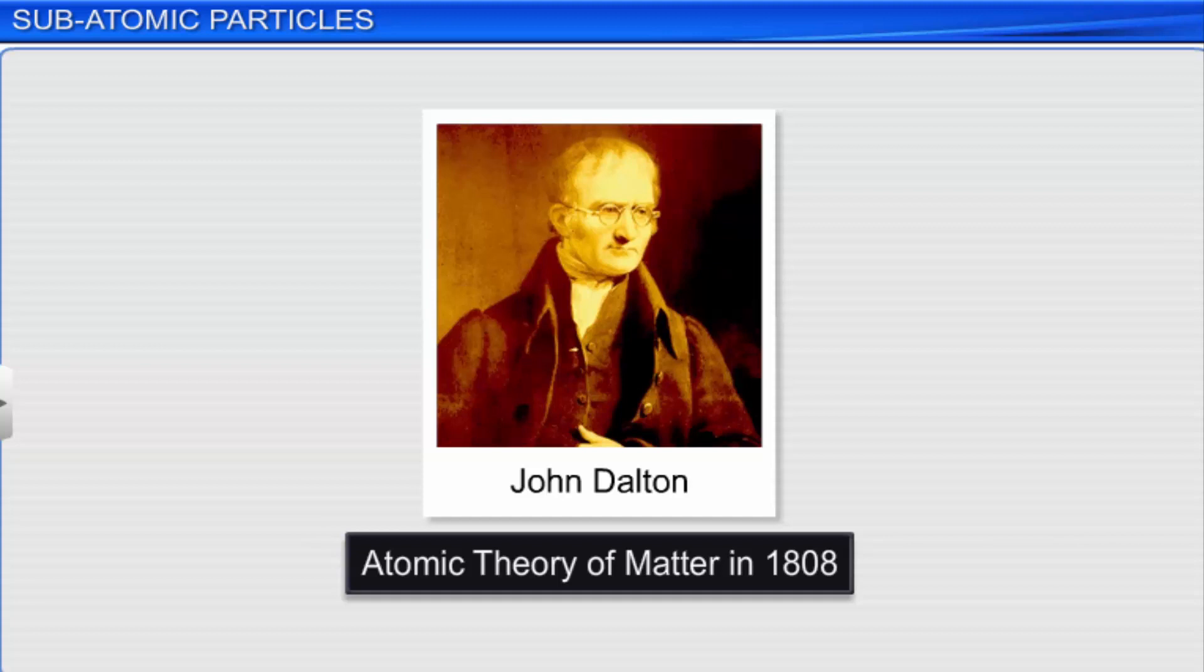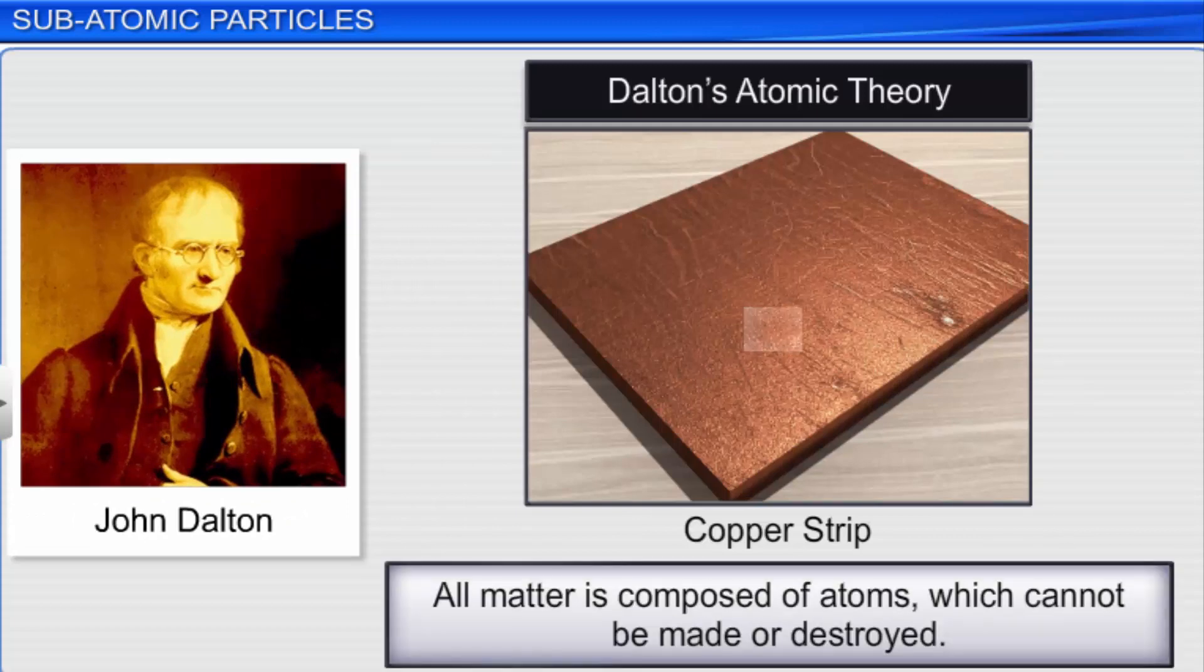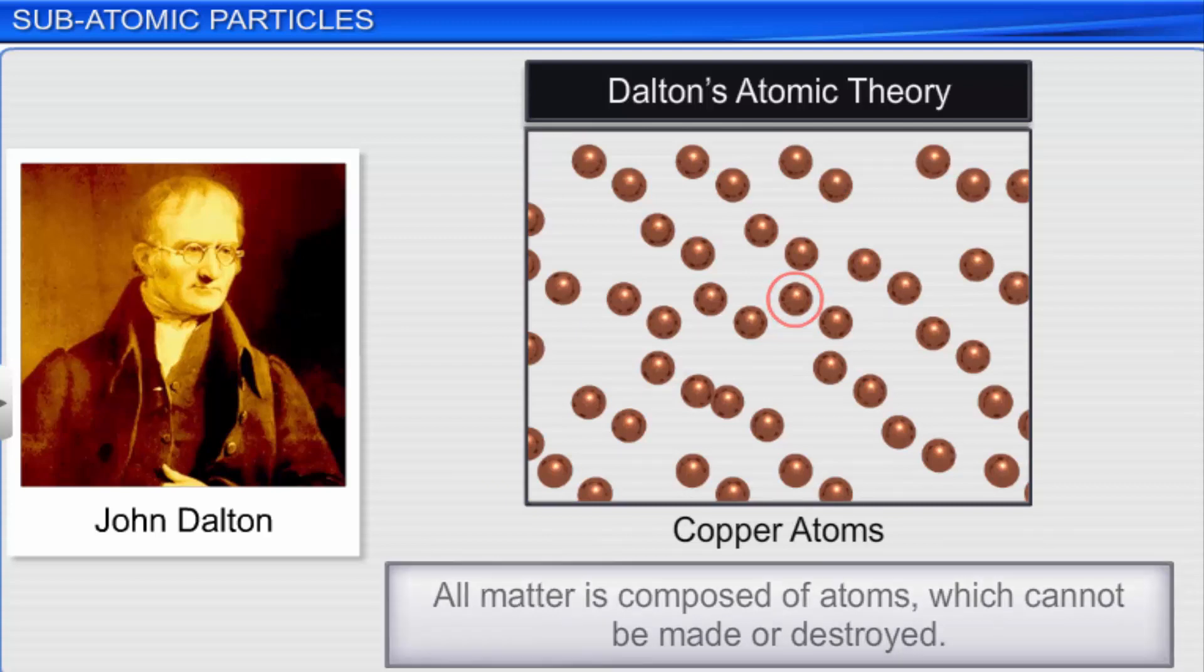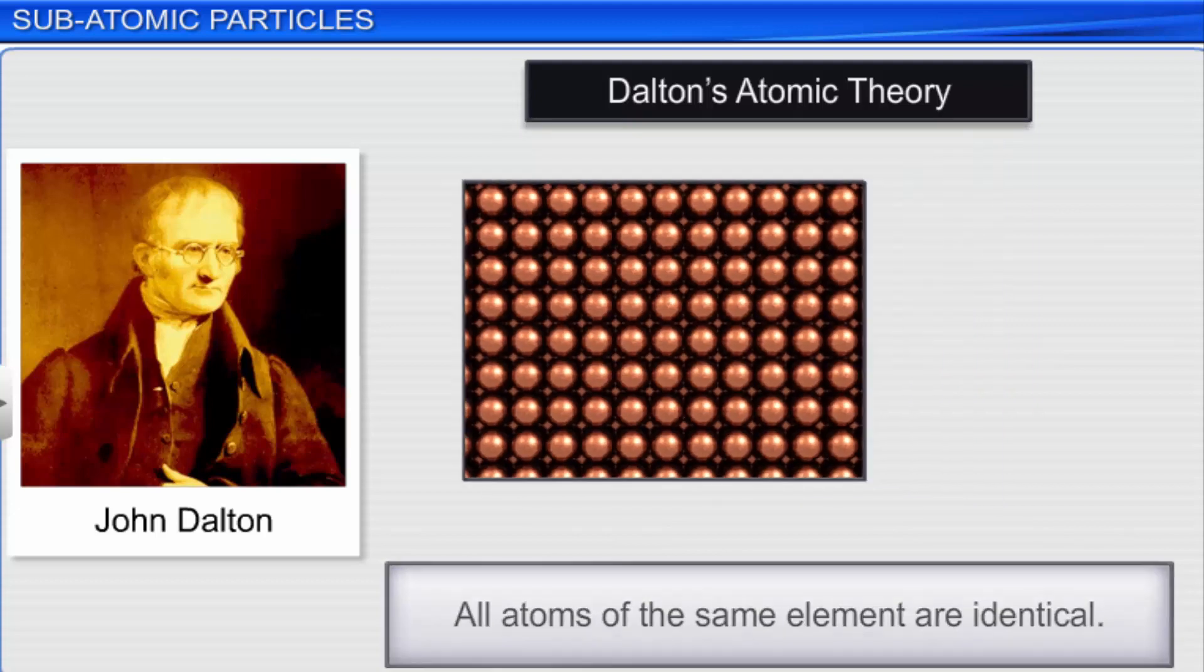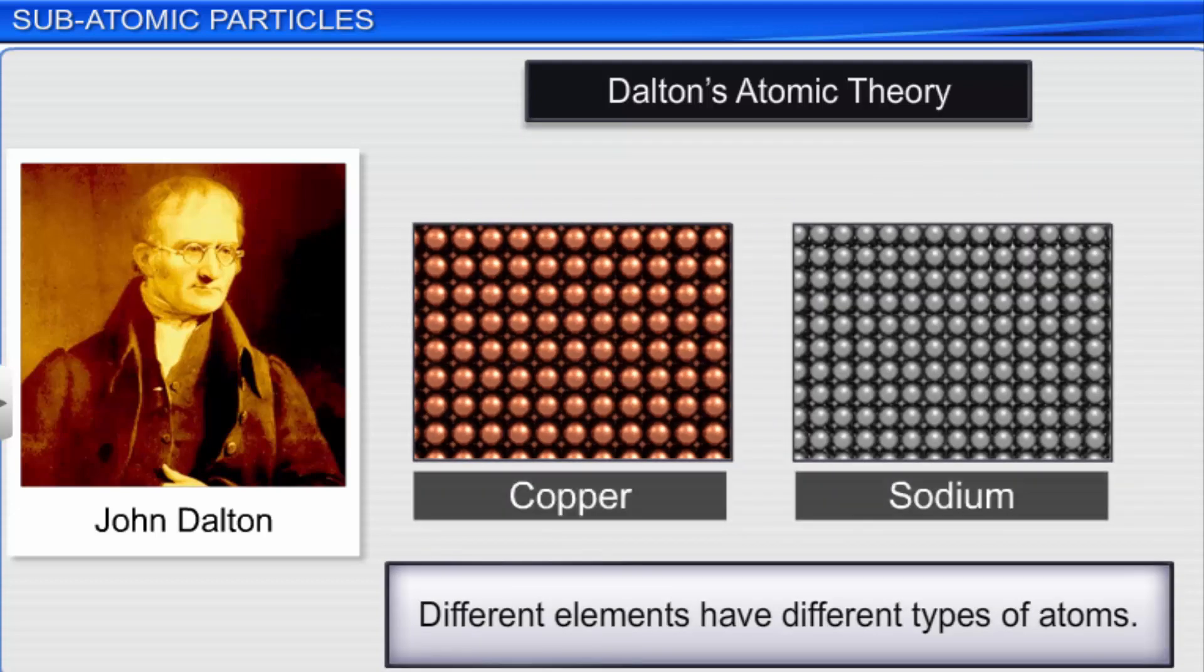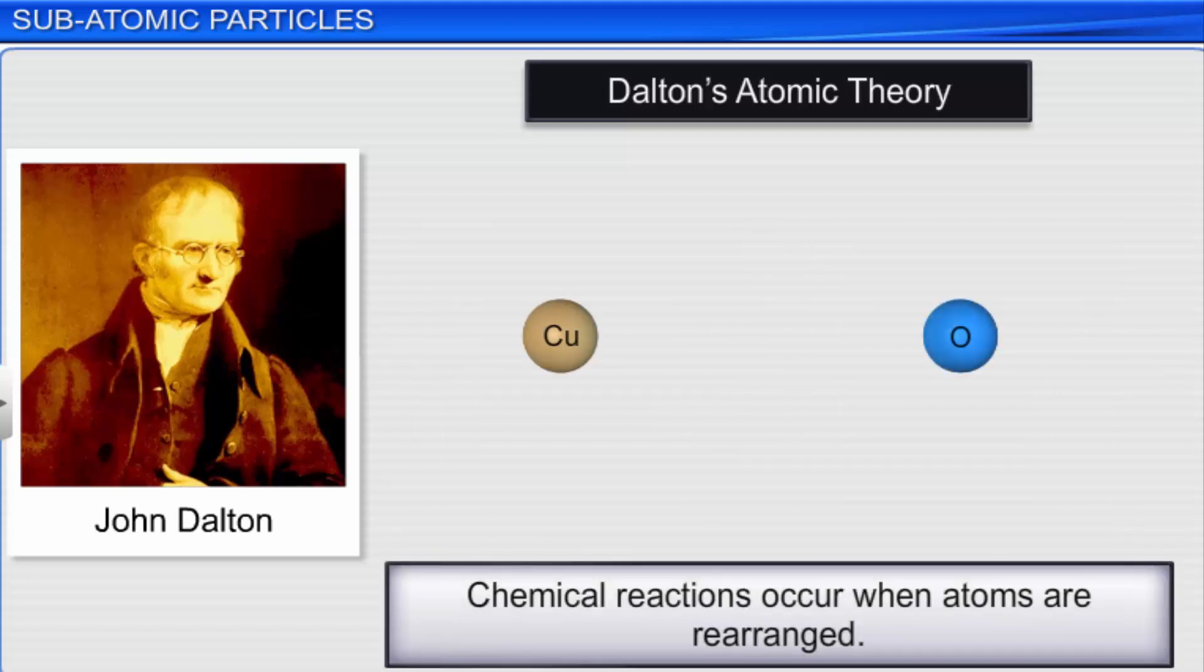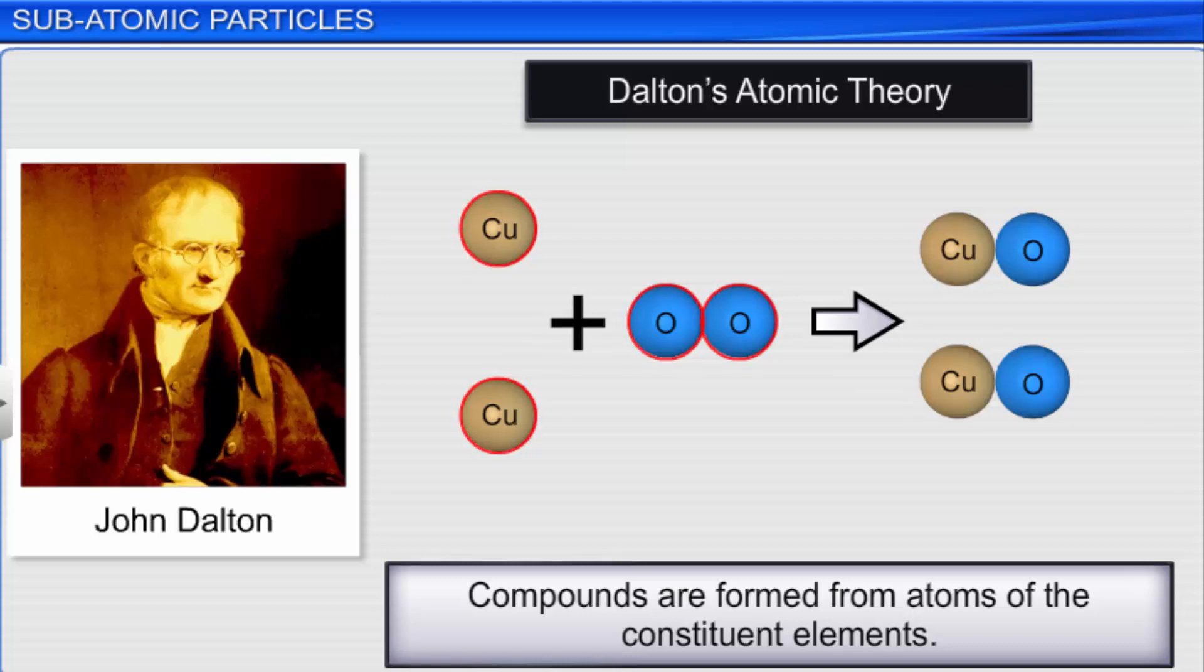Dalton proposed that atom is the ultimate particle of matter. This theory is called Dalton's atomic theory. It postulates that all matter is composed of atoms that cannot be made or destroyed, all atoms of the same element are identical, different elements have different types of atoms, chemical reactions occur when atoms are rearranged, and compounds are formed from atoms of the constituent elements.